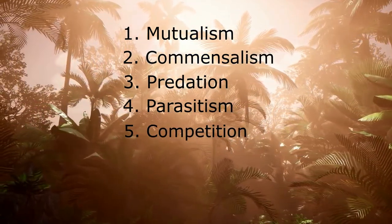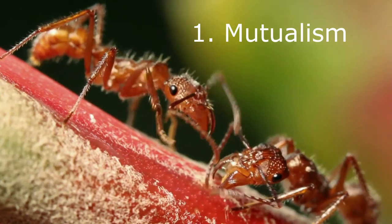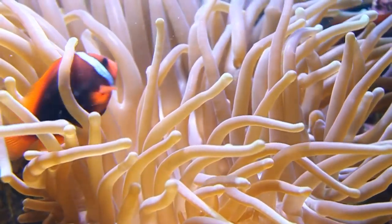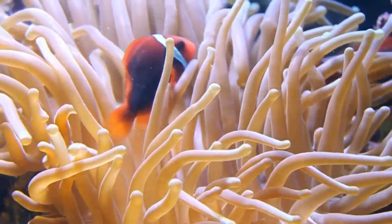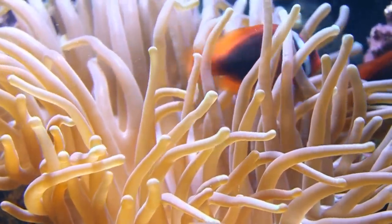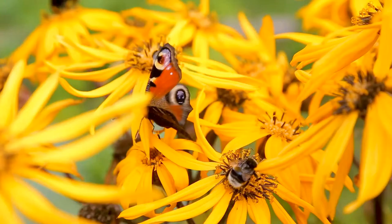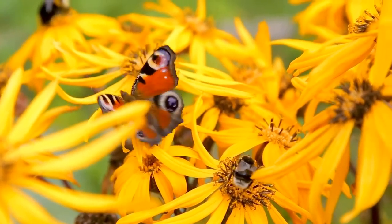Number one, mutualism. In a mutualistic relationship, both species benefit. Examples include sea anemones and clownfish, algae and fungus that forms lichens, digestive bacteria and humans, and butterflies pollinating flowers.